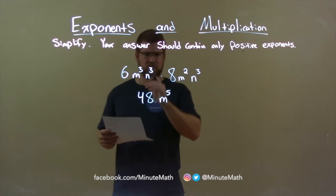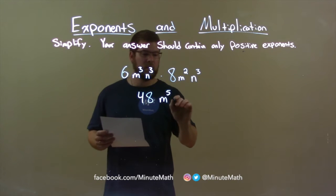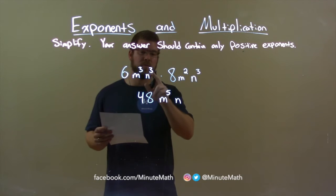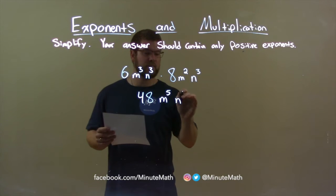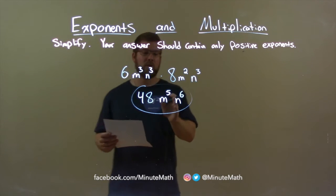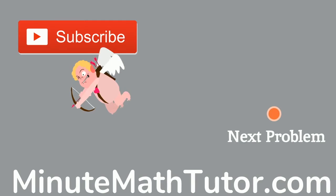Lastly, let's deal with the variable n. Well, we have n to the third times n to the third. Again, we add the exponents. 3 plus 3 is 6. And so my final answer is 48m to the fifth power times n to the sixth power. Minute Math,